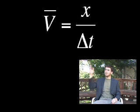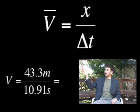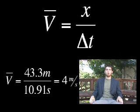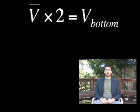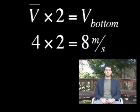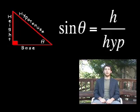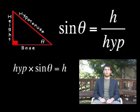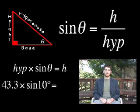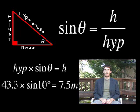Since this is constant acceleration, the average velocity equals distance over time. That's 43.3 meters over 10.91 seconds, which comes out to about 4 meters per second. If we multiply the average velocity by 2, we get the velocity at the bottom of the ramp, which is 8 meters per second. We calculate the height of the ramp by using the equation sine theta equals the height over the hypotenuse. So the hypotenuse times sine theta equals the height. We put the numbers we recently calculated into our equation and we come out with a height of 7.5 meters.